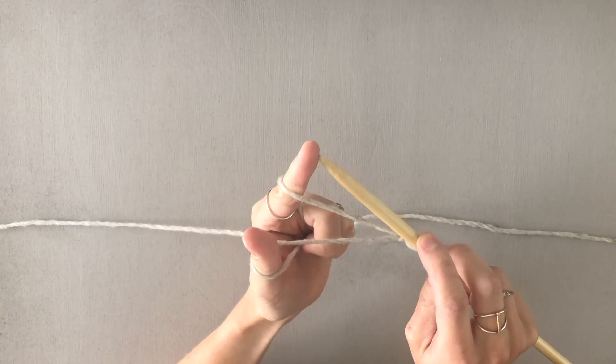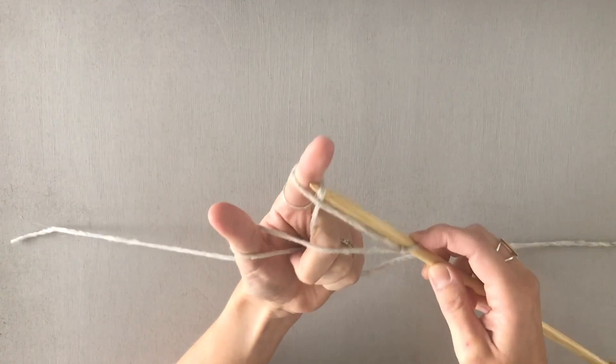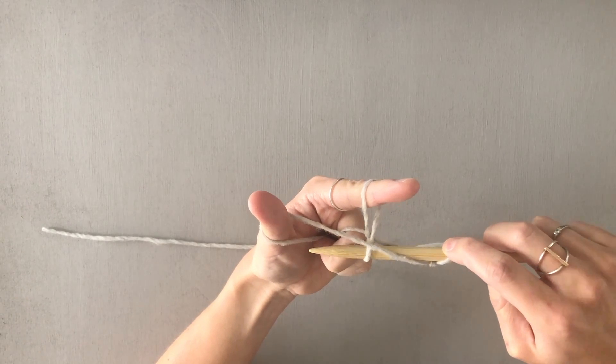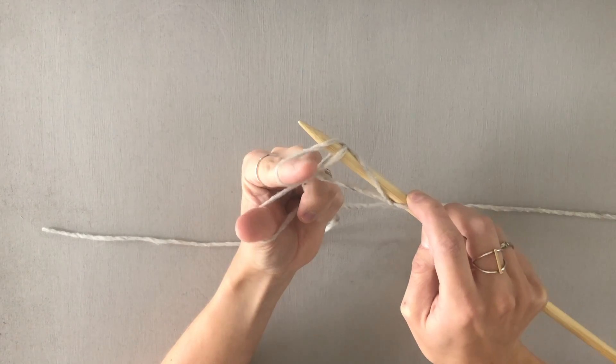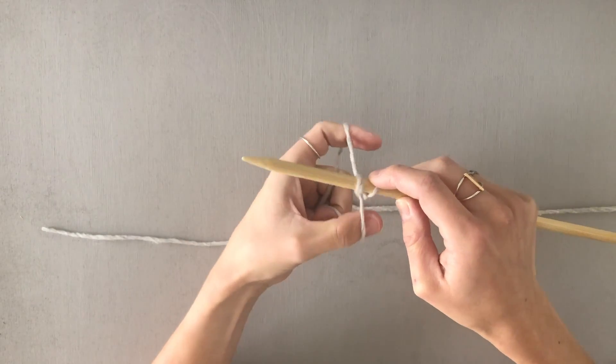With the tip of your needle draw it down your finger and grab this back strand of yarn, and then come under your thumb and then through this loop, and then let your pointer finger fall out and then tighten the stitch.